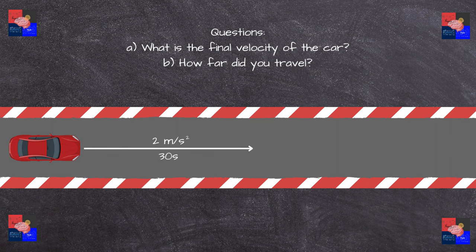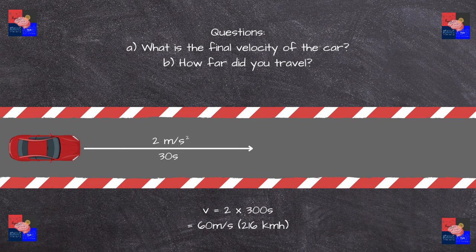Let's first find out the final velocity. So vt = vi + at. We have 0 meters per second plus 2 meters per second squared times 30 seconds, and we get a total of 60 meters per second, which is right around 216 kilometers per hour.